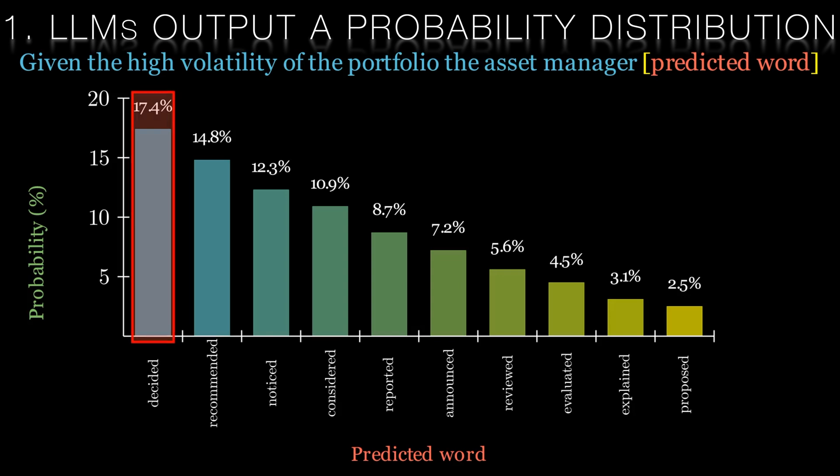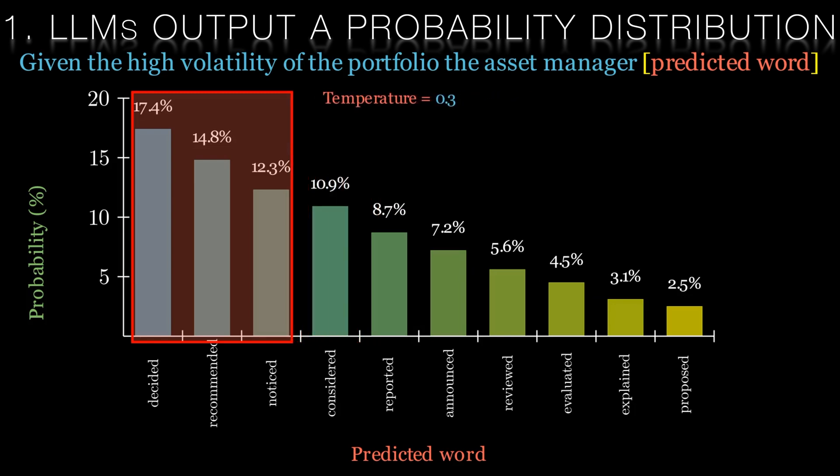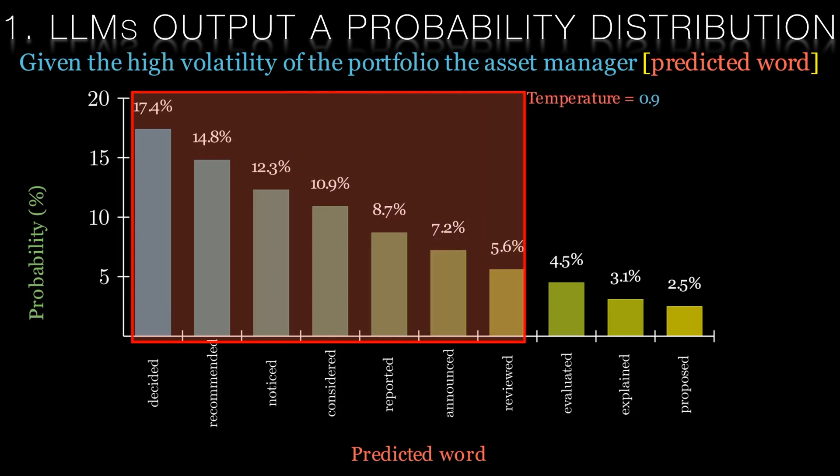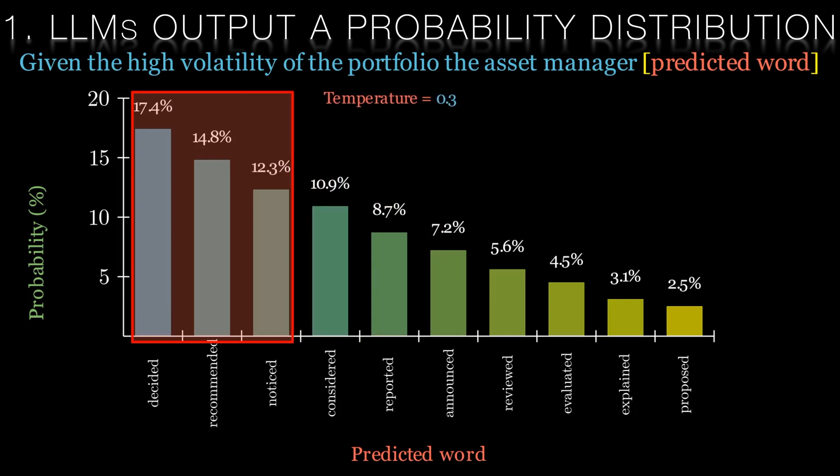Moreover, there's a fascinating aspect called temperature. At zero temperature, the AI always chooses the next most likely word. But as we increase the temperature, the AI starts to consider less likely options, adding creativity and variety to its responses. See how the word choices can change as we adjust the temperature. Lower temperatures lead to more predictable and conservative language, while higher temperatures allow for more diverse and expressive outputs. This concept is crucial in prompt engineering. It's not just about the words we feed into the model. It's about understanding how these AI brains weigh their choices and how we can influence that process.